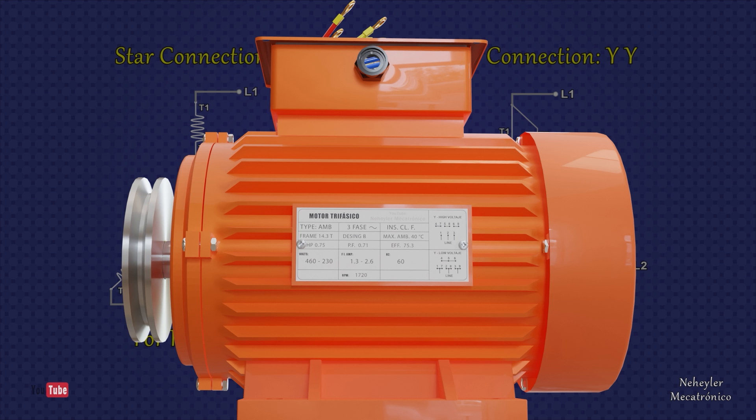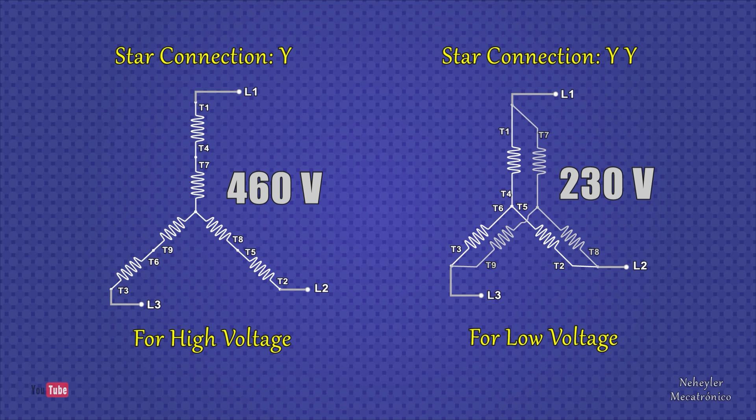This means that, on the nameplate, two voltage levels are specified at which the motor can work. For this example, 460 volts is the high voltage and 230 volts is the low voltage.